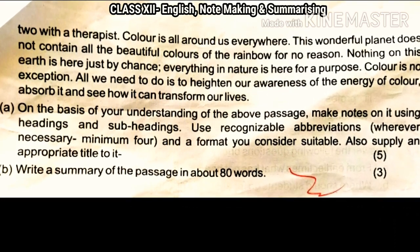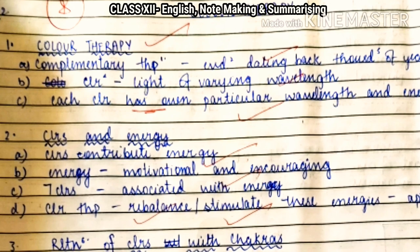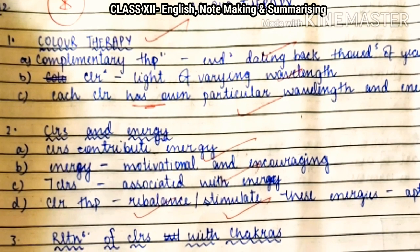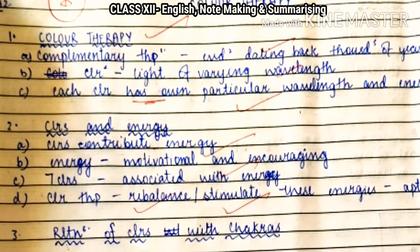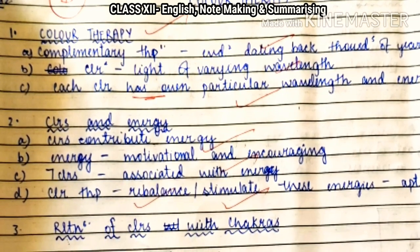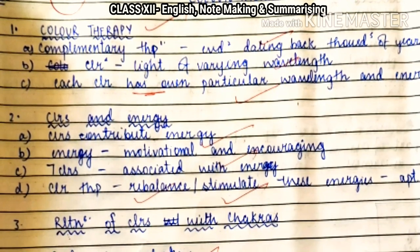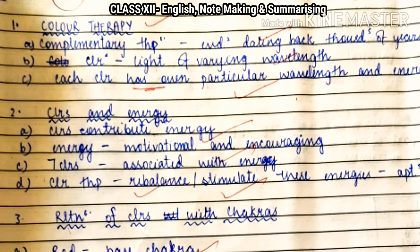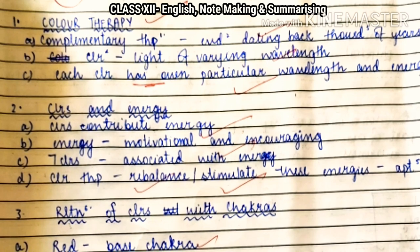So this is note making. Now I have certain sample examples for you — these are samples from your class only. The students of your class had done it and they are almost perfect samples for this particular example, color therapy. You can have a look. The sub-headings are given, abbreviations and symbols are used. For example: complementary therapy — you can abbreviate the word 'therapy'; evidence dating back thousands of years; color as a light of varying wavelength; each color has its own particular wavelength and energy. That's the first point done.